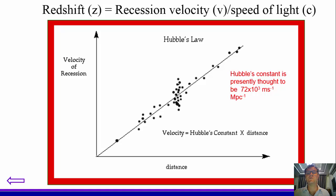So Hubble's constant is presently thought to be 72 times 10 to the 3 meters per second per megaparsec. So that's the gradient we have at this moment in time. Notice the distance is measured in megaparsecs and the velocity of recession in meters per second.